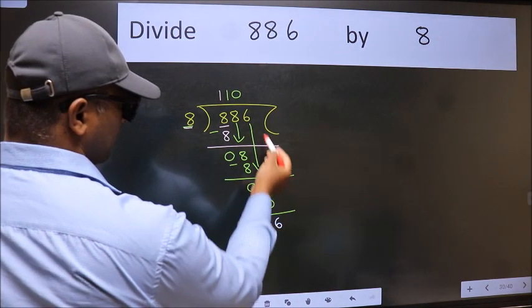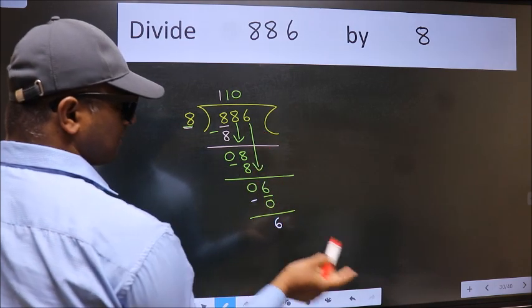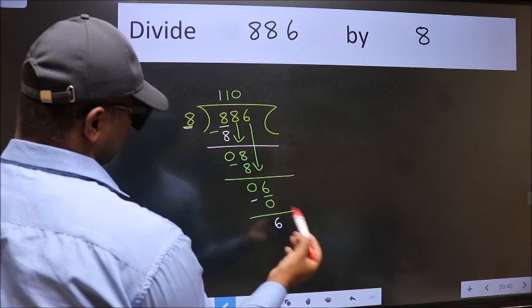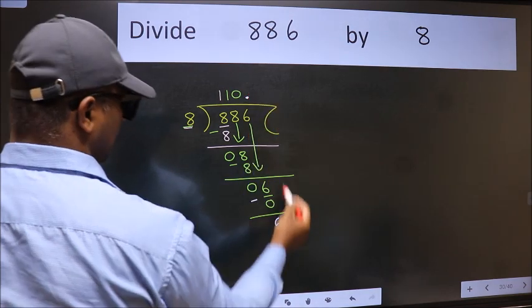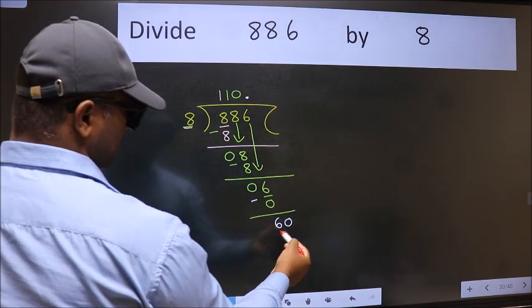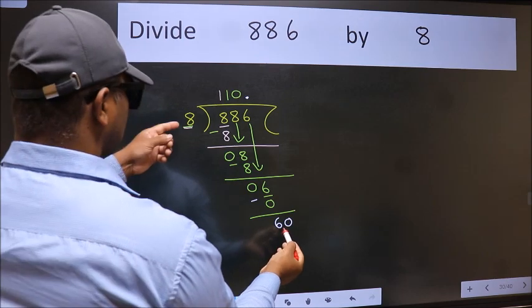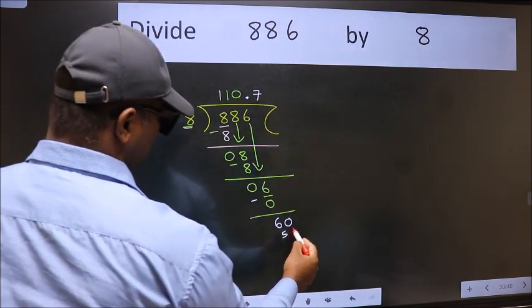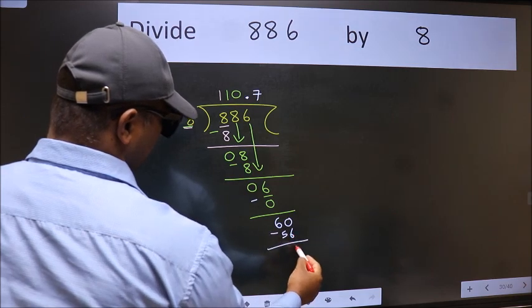Over here we did not bring any number down, and 6 is smaller than 8. So now we can put dot and take 0. So 60. A number close to 60 in 8 table is 8 7's 56. Now we subtract. We get 4.